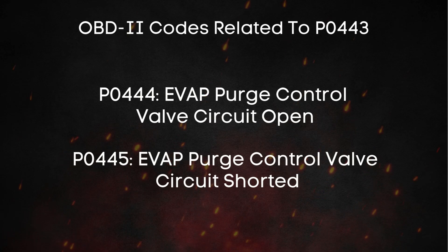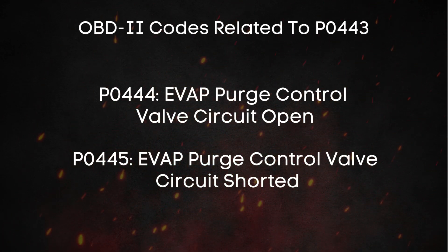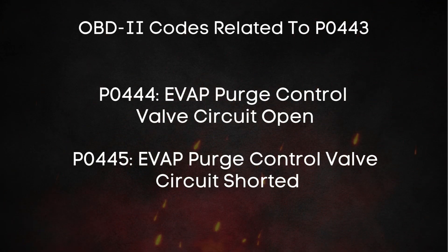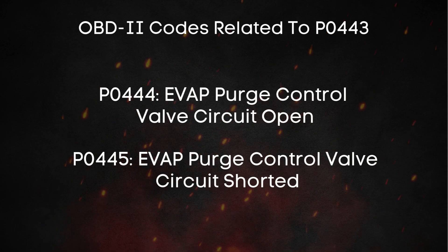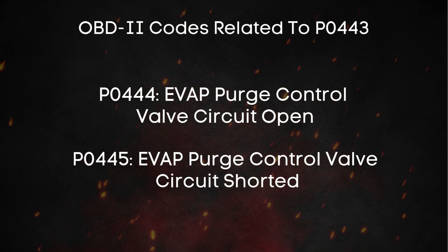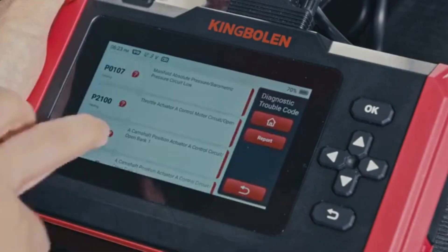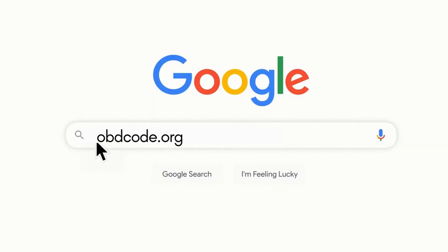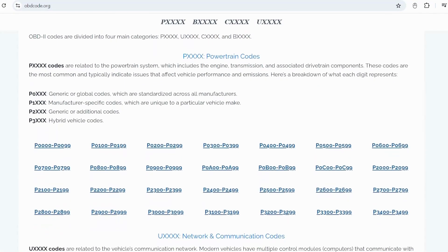Just like the P0443 code, you might also come across other trouble codes related to the EVAP system. For example, P0444 indicates an EVAP purge control valve circuit shorted, which suggests there's an unintended connection somewhere in the wiring, possibly causing a short circuit. If you want to read more about other OBD2 codes, you can visit our website obdcode.org for a full list of codes and their meanings.